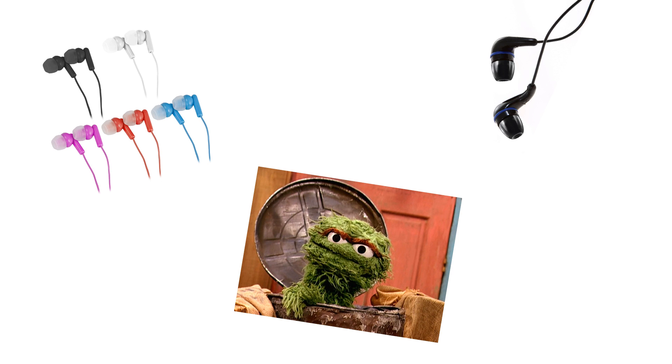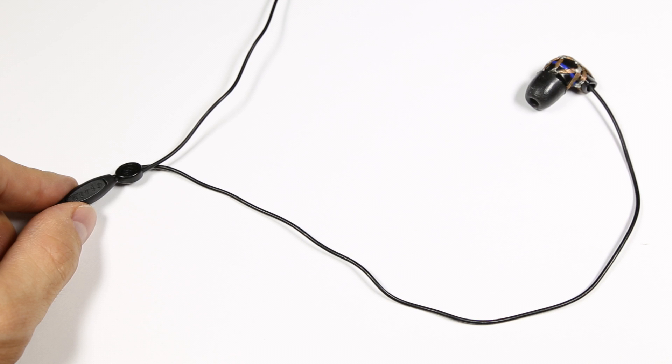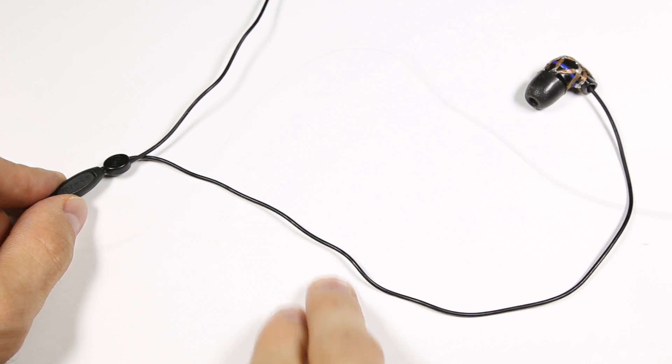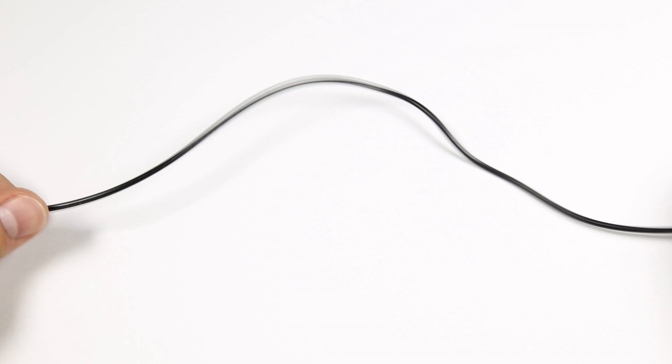Over time the wires inside of the cables can get all twisted up. When this happens, the cable will have a wavy pattern in it or it won't lie flat. This puts the wires under a lot of stress and eventually they'll break, like mine did.